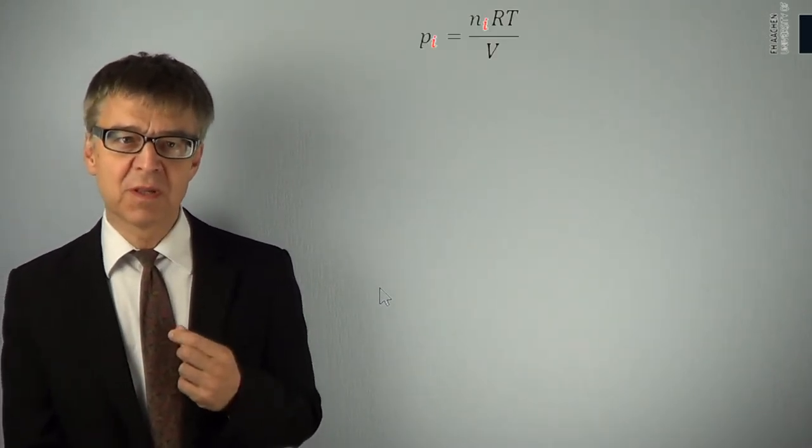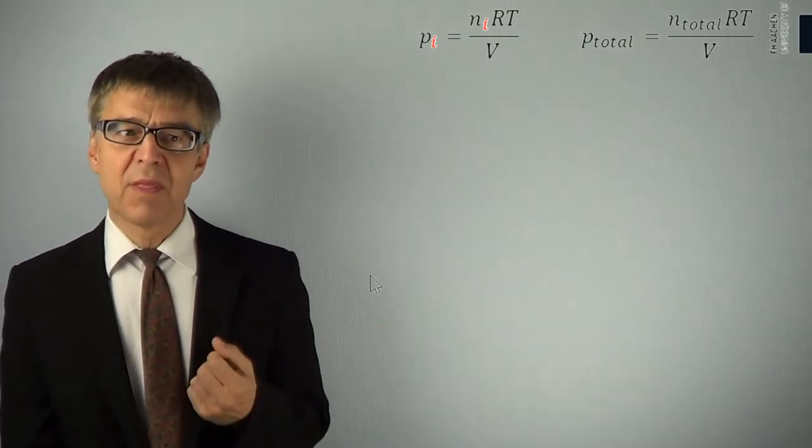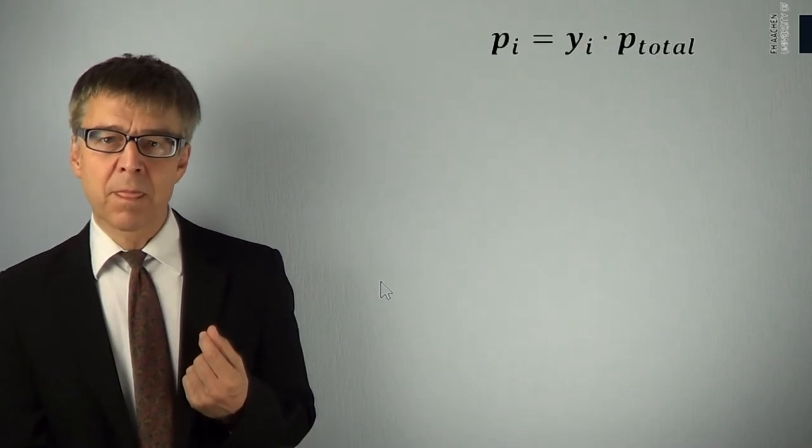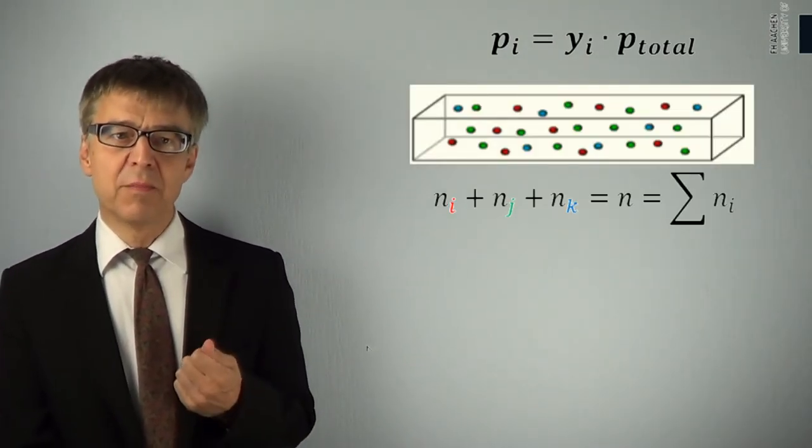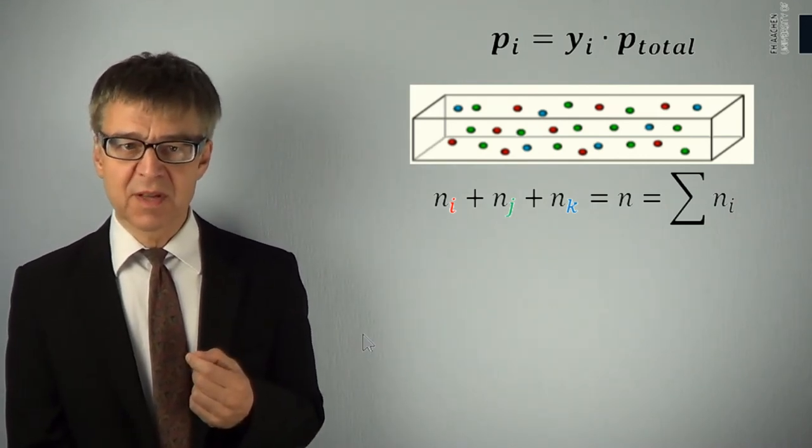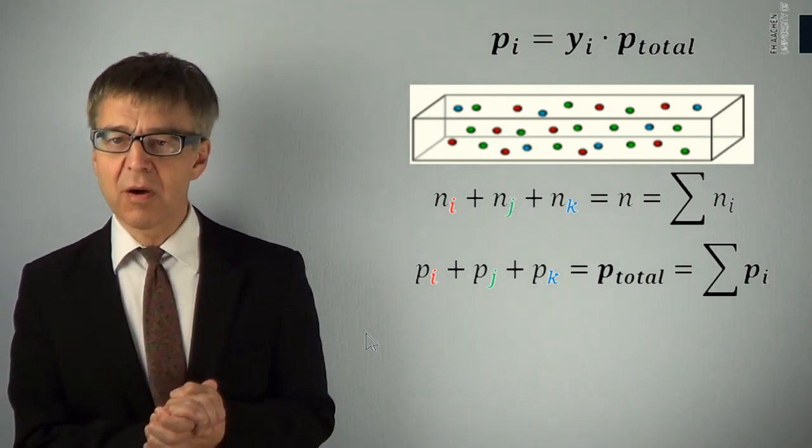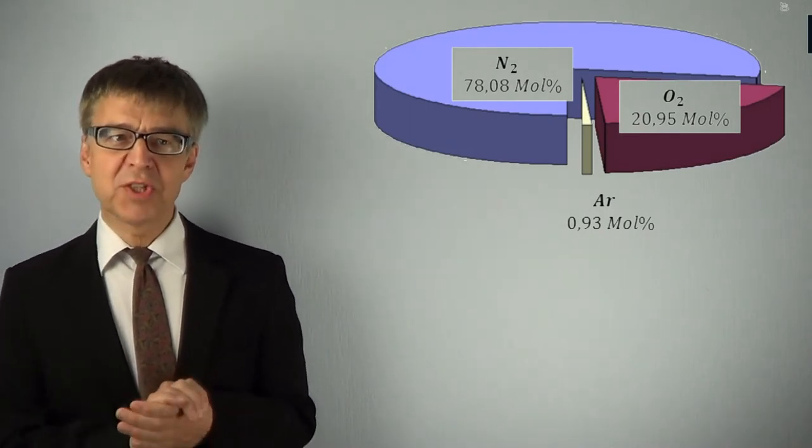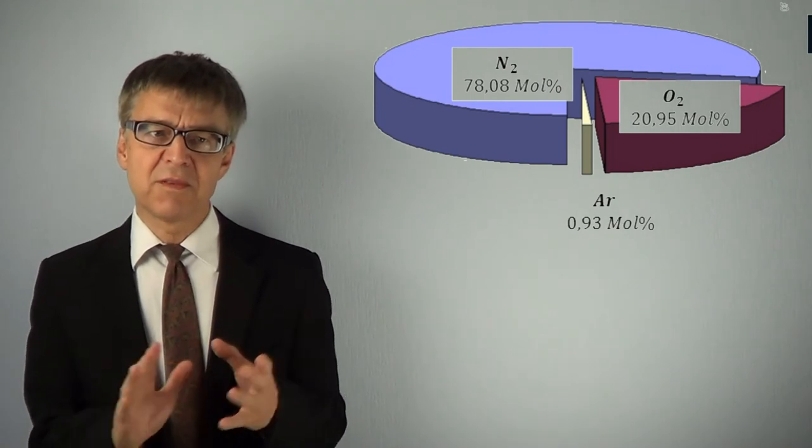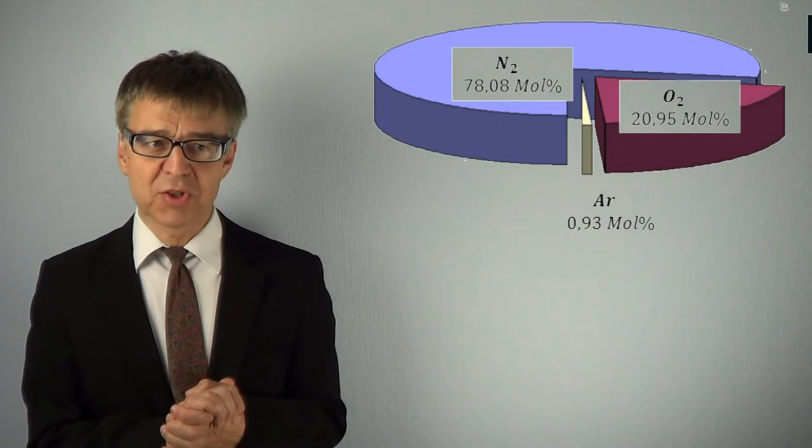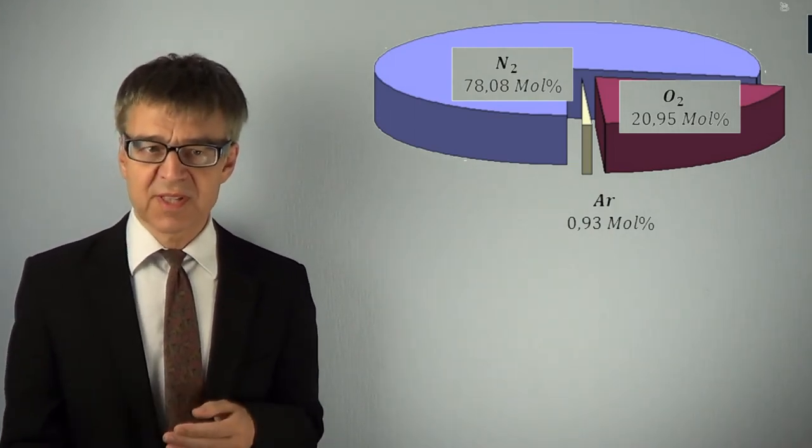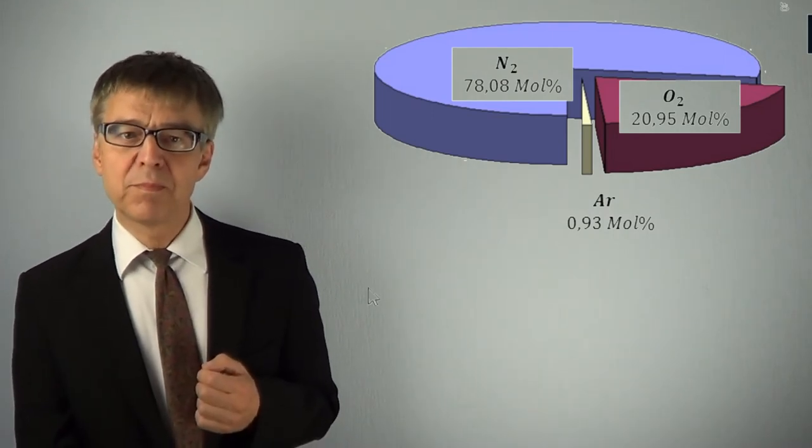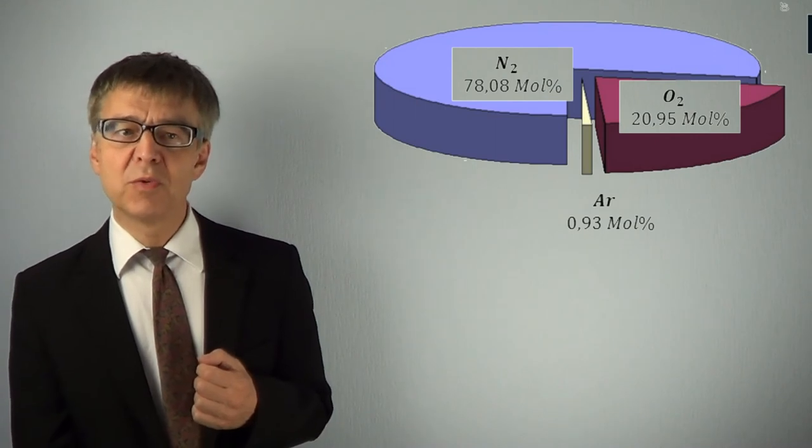If we divide partial pressure by total pressure, we get N over N total, which is the molar fraction Y. The partial pressures P sub I add up to the total pressure, just like the moles N sub I do to the total amount of substance. These are the two formulations of Dalton's law. An important gas mixture is air. Dry air consists of about 78 mol percent nitrogen and 21 mol percent oxygen. At a total pressure of 1 bar, the partial pressure of nitrogen N sub N2 is equal to 0.78 bar and the partial pressure P sub O2 of oxygen is equal to 0.21 bar.